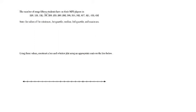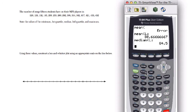The number of songs 15 students have on their MP3 players is the following. State the values of the minimum, first quartile, median, third quartile, and maximum. So we're constructing a box and whisker plot.